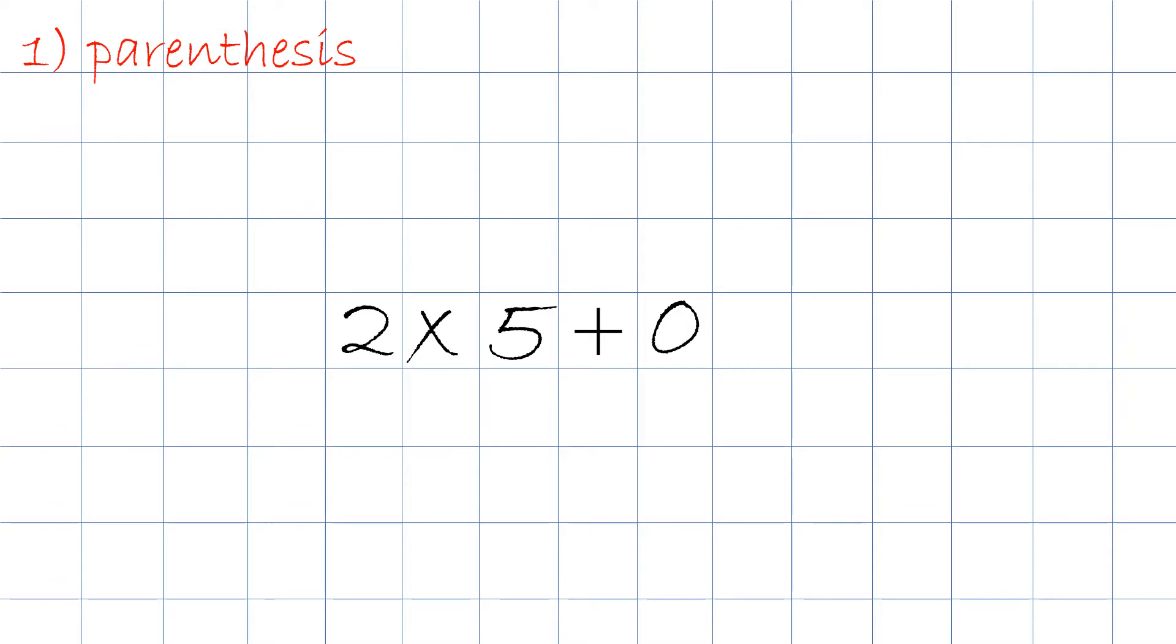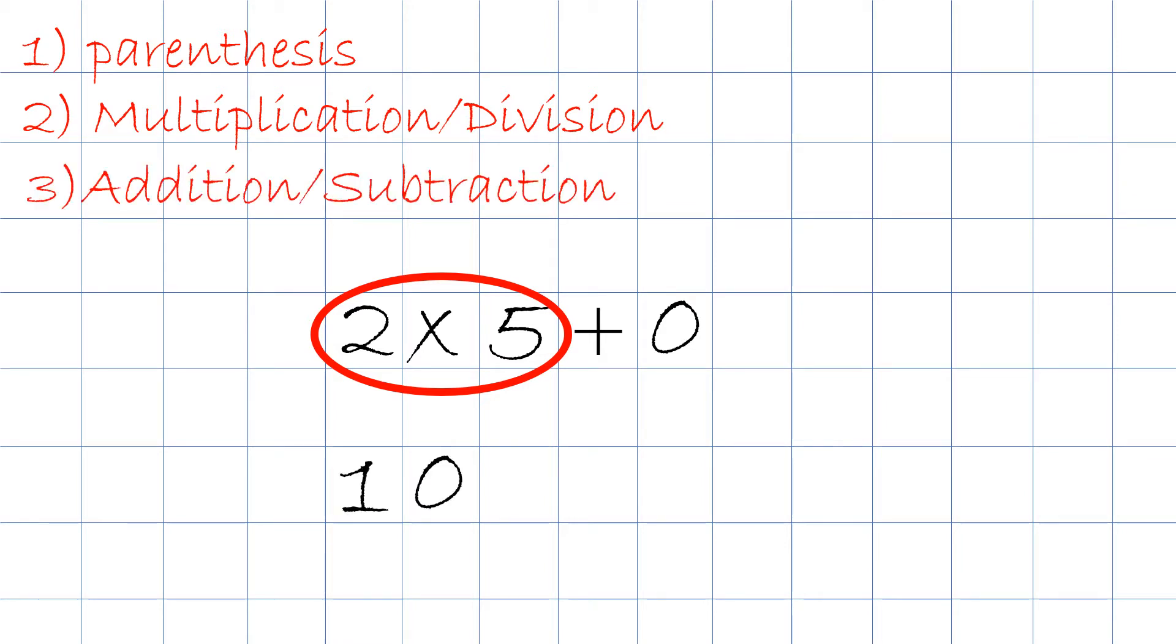Next thing we do is we do division and multiplication left to right. And here we have 2 times 5. We know the answer will be 10. We write the 10 right up here and then we rewrite it.